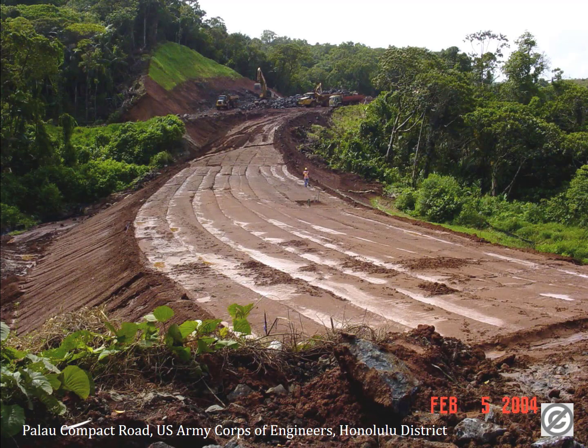Many civil engineering projects include earthwork. This particular project shows a roadway project, and as you can see in the background, this area used to be a hill. The original ground surface was somewhere near this red line shown, and the soil beneath that has all been removed, or cut, from this area. Therefore, we call this area a cut area of the roadway.